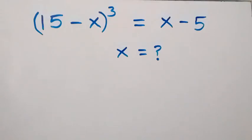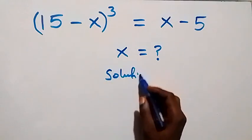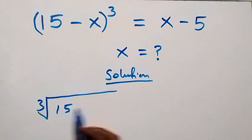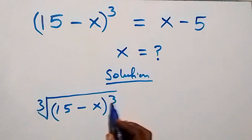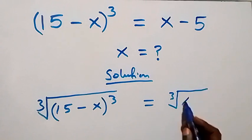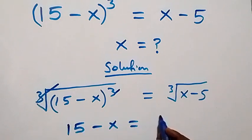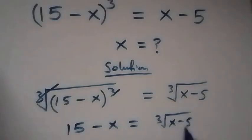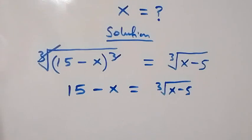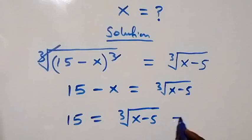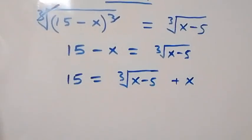Hello, welcome. We're going to solve for x in this algebra problem. Let's take the cube root on both sides. We have the cube root of 15 minus x, all raised to the power 3, equals the cube root of x minus 5. The cube root and cube cancel, leaving us with 15 minus x equals the cube root of x minus 5. Taking minus x to the other side, this becomes 15 equals the cube root of x minus 5, plus x.